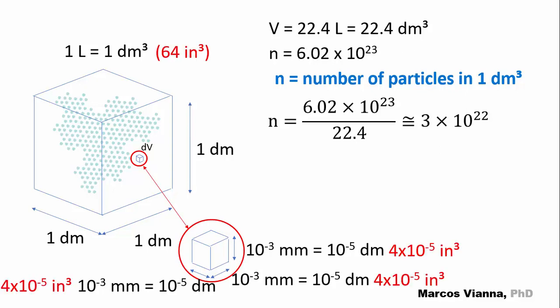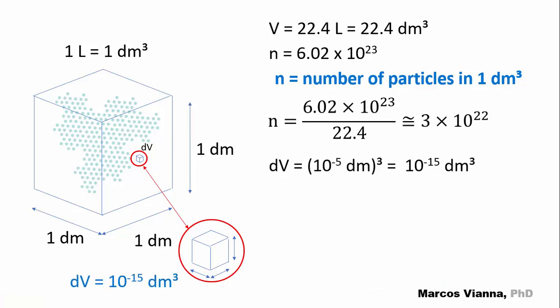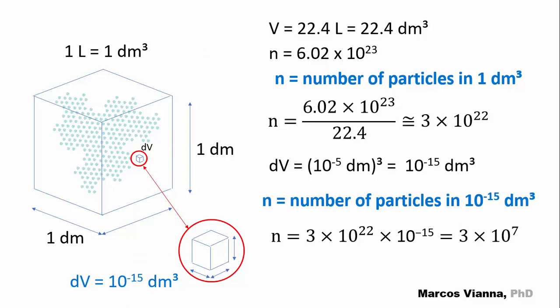The DV volume will be 10 to minus 15 cubic decimeters, which will be 64 times 10 to minus 15 cubic inches, and the corresponding number of particles will be 3 times 10 to 7.